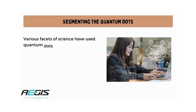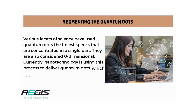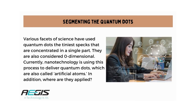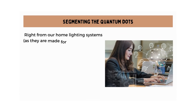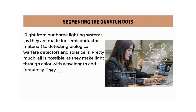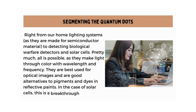Next is segmenting quantum dots. Various facets of science have used quantum dots — the tiniest specks that are concentrated in a single part. They are also considered zero-dimensional. Currently, nanotechnology is using this process to deliver quantum dots, which are also called artificial atoms. They are applied in home lighting systems, as they are made from semiconductor material, to detecting biological warfare agents and solar cells. They make light through color with wavelength and frequency. They are best used for optical images and are good alternatives to pigments and dyes in reflective paints. In the case of solar cells, this is a breakthrough technology.